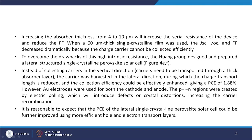Increasing the absorber thickness from 4 to 10 micron will increase the serial resistance of the device and reduce the fill factor. When a 60 micrometer thick single crystal film was used, the JSC, VOC, and fill factor decreased dramatically because charge carriers cannot be collected efficiently. To overcome the drawbacks of high intrinsic resistance, the Huang group designed and prepared a lateral structure single crystal perovskite solar cell. Instead of collecting carriers in the vertical direction through a thick absorber layer, carriers are harvested laterally, reducing charge transport length and enhancing collection efficiency, giving a photovoltaic performance of 1.88 percent — still much lower than the bulk counterpart.